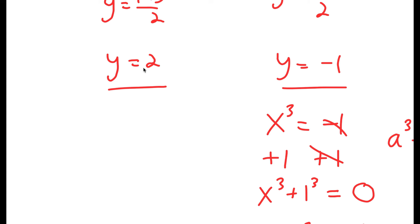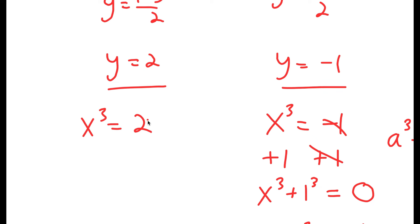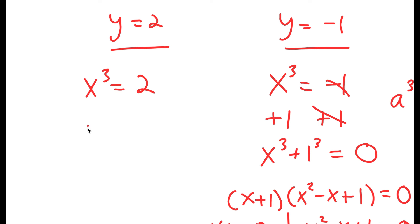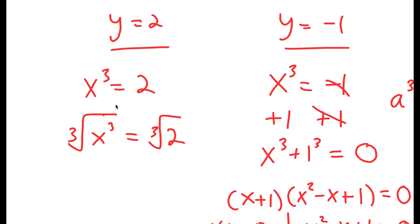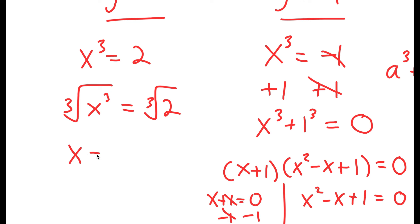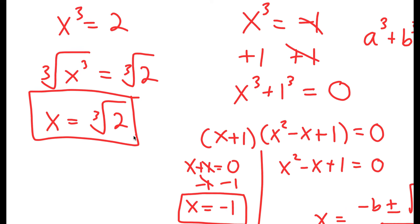Now for y equals 2, I get x to the power of 3 equals 2. To solve this, I take the cube root on both sides. The cube root of x to the power of 3 is x, so I get x equals the cube root of 2. This is my fourth solution to the equation.